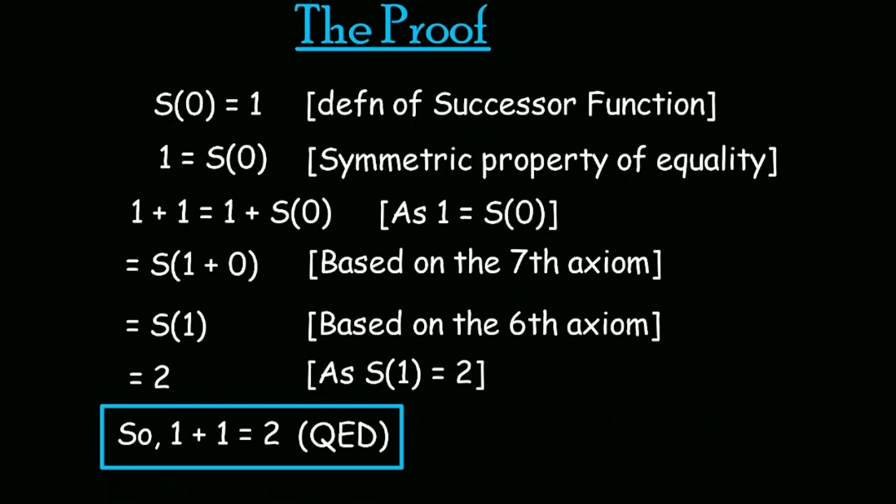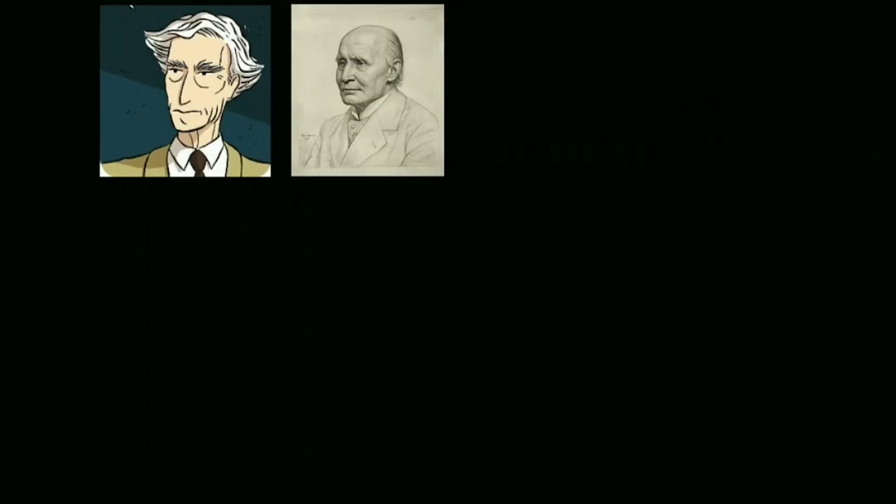Now, maybe some of you are wondering, this is such a small proof. How come Russell and Whitehead had to use 370 pages to write it? Well, to prove this, we used Peano axioms to define every component of the statement, but we still took a lot of underlying logic for granted.